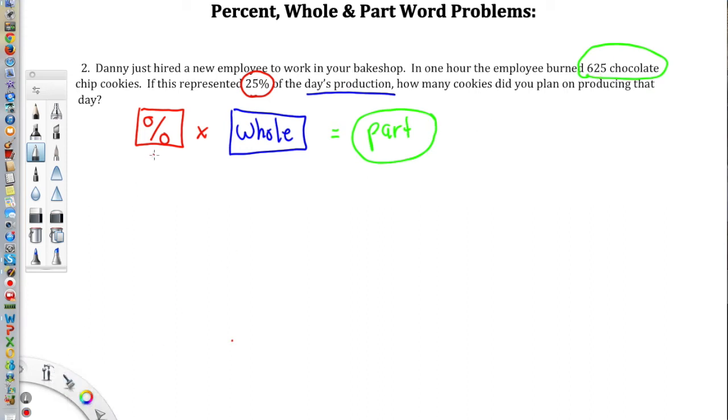I'll start out with, I've got 25%. That's my percentage. My whole, I'm just going to give it the variable w. I don't know. That's my unknown. And then my part, 25% of the whole, is 625 chocolate chip cookies. What a sad mistake. That's a lot of cookies, a lot of yummy cookies that are being burnt.